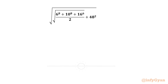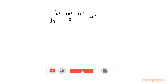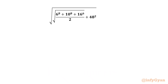Hello my dear friends, welcome back to Infigyan. In this video we have one very interesting question from Radical Mathematics. Here we have to simplify one radical expression without using a calculator. The expression is square root of square root of 6 power 8 plus 10 power 8 plus 16 power 6, over 2 plus 48 squared. So let us get started by writing this as our expression E.